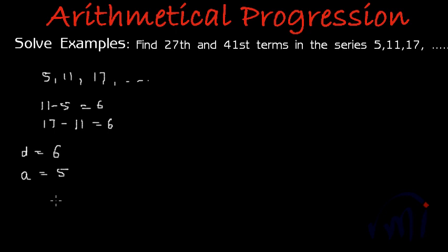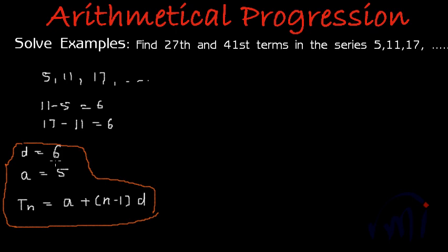What is the formula to find the nth term? To find the nth term we write T_n equals a plus (n-1)d. This is the formula. We have the first term, we have the common difference, and we have the formula to find the nth term.